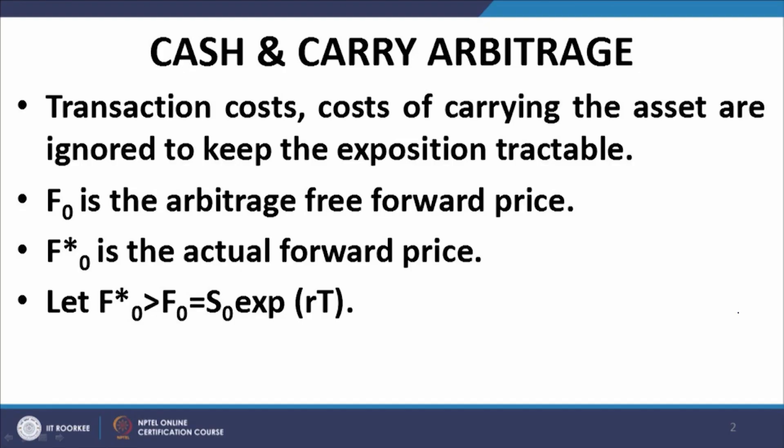Let us recap the concept of cash and carry arbitrage and reverse cash and carry arbitrage. Cash and carry arbitrage takes place when the actual forward price F*0 exceeds the arbitrage-free forward price F0. We take a long position — borrowing an amount S0, the spot price of the underlying asset at t=0 — buy one unit of the underlying asset in the spot market, hold it, and against this holding take a short forward position entailing delivery of the asset and receipt of the forward price.